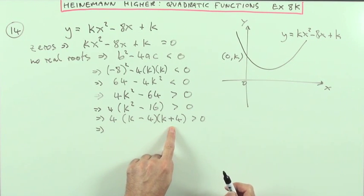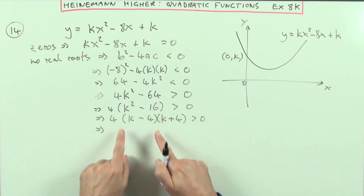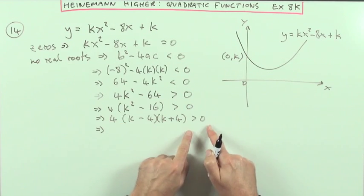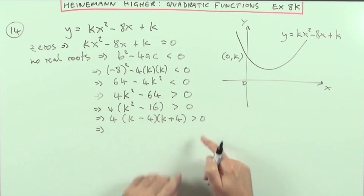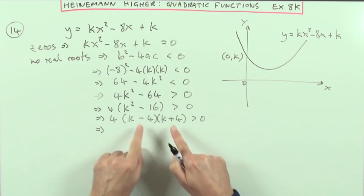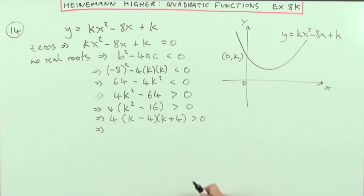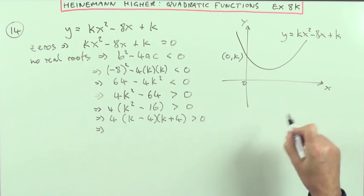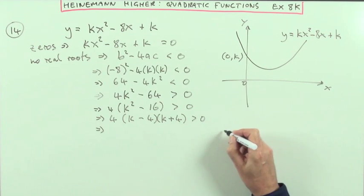And again, now that you see little linear equations, don't be tempted to think that's either greater than zero or that's either greater than zero. Because if that was less than zero and that was less than zero, the product would still be greater than zero. Now you have to keep everything on one side and consider how the answers twist and change.